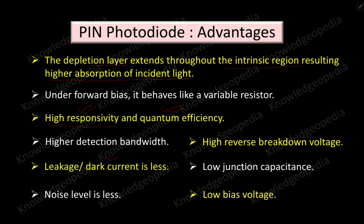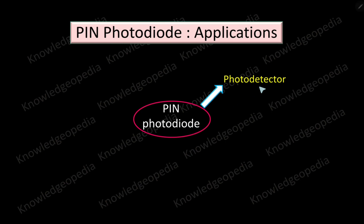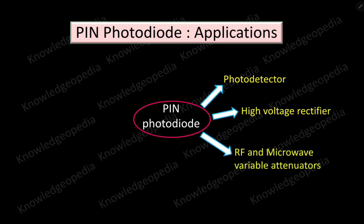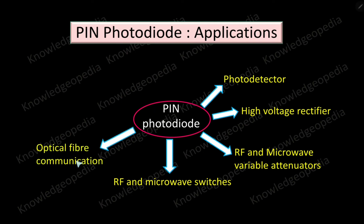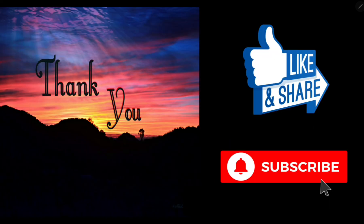PIN photodiodes are applicable in many fields. They are used as photo detectors and as high voltage rectifiers. They are useful in radio frequency and microwave variable attenuators and switches. They are very useful in optical fiber communication, which is an advanced communication system. They are also used in medical treatment such as MRI, and to detect X-rays and gamma ray photons.